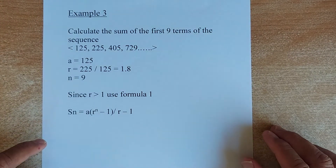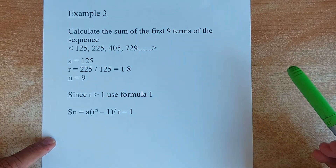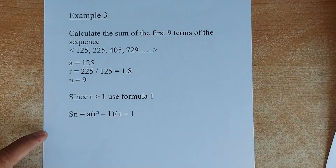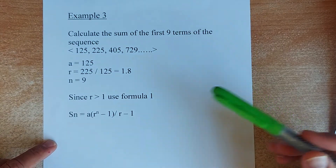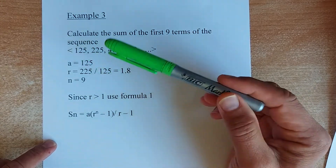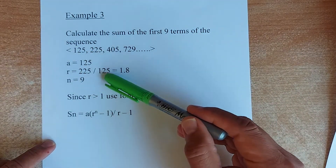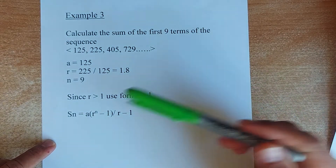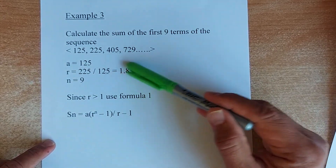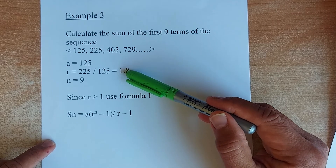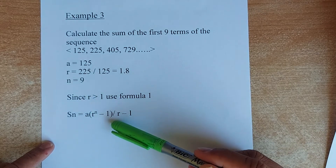The question says: calculate the sum of the first N terms. Instead of finding just one term, you are going to add all terms for the first 9 terms and get the answer. A is 1.25 — the first term. R is found by taking the second term divided by the first term: 2.5 divided by 1.25, put in the calculator, is 1.8. And N, since they calculate the first 9 terms, N is 9. Since R is greater than 1, we use the first formula: SN equals A times (R to the power N minus 1) divided by (R minus 1).